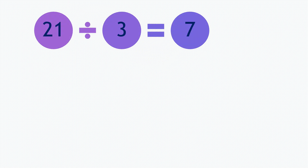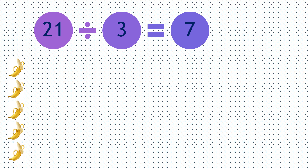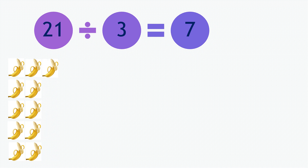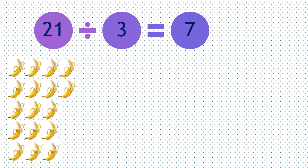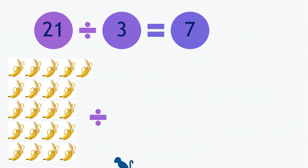Moving on to our next question. 21 divided by 3 equals 7. So if you have 21 bananas — 1, 2, 3, 4, 5, 6, 7, 8, 9, 10, 11, 12, 13, 14, 15, 16, 17, 18, 19, 20, 21 — and if you divide them by 3 monkeys.